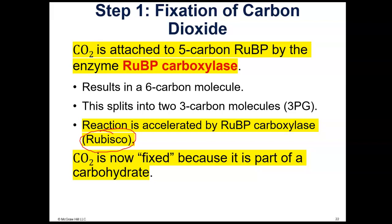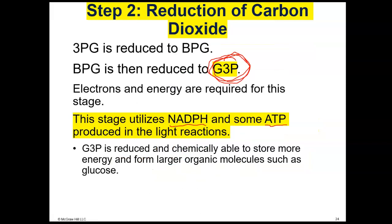The enzyme that carries out Step 1 is called RuBP carboxylase, but we call it RuBisCO for short. Carbon dioxide becomes attached to RuBP in Step 1, and this is an important step because we'll come back to it — high temperatures can cause certain things to happen that aren't good for plants, and we will cover the problems with Step 1 for some plants.